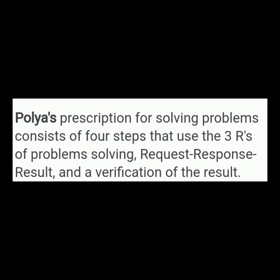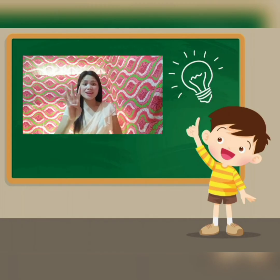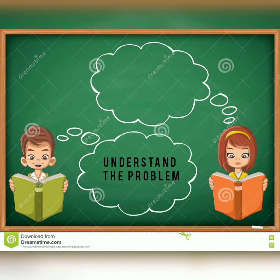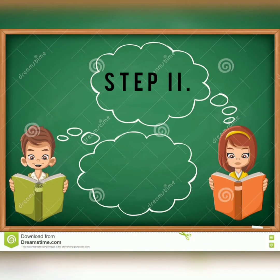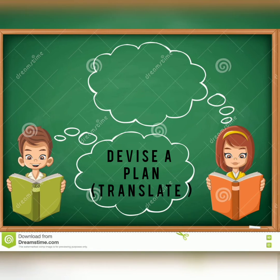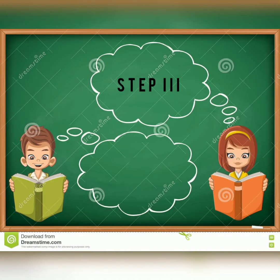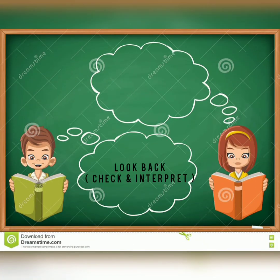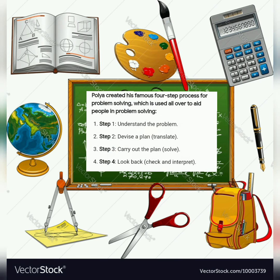Polya's prescription for solving problems consists of four steps that use the three R's of problem solving: request, response, result, and a verification of the result. Polya's method has four steps — Step 1: Understand the problem. Step 2: Device a plan or translate. Step 3: Carry out the plan or solve. Step 4: Look back or check and interpret.